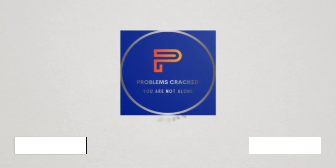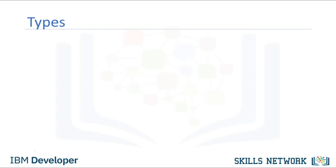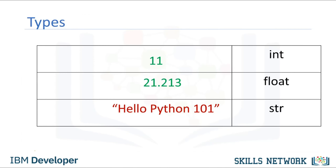A type is how Python represents different types of data. In this video, we will discuss some widely used types in Python. You can have different types in Python: integers like 11, real numbers like 21.213, or even words. Integers, real numbers, and words can be expressed as different data types. The following chart summarizes three data types for these examples.